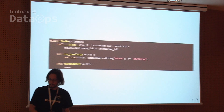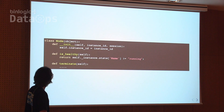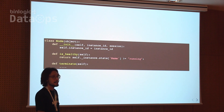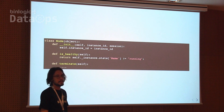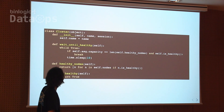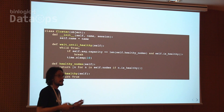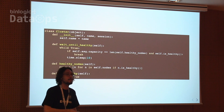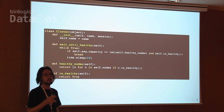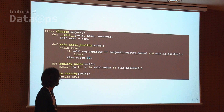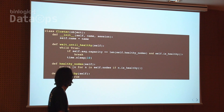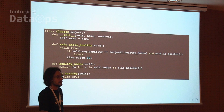A node object receives an instance ID from AWS — the basic check is: if the node is running, it's healthy. For the cluster, we wait until the auto-scaling group capacity is matched: if we want three nodes, it's healthy when we have three healthy nodes and the cluster itself is also healthy. This is the base class from which all others inherit, and the basic cluster check is: healthy if all nodes are healthy.